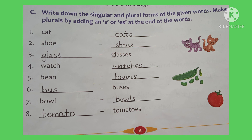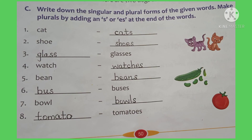The next one is Bean → Beans — we add only S to the word Bean. The next one is Bus → Buses. The word Bus ends with S, so we add ES: B, U, S + ES = Buses. Then Bowl → Bowls, and Tomato → Tomatoes.